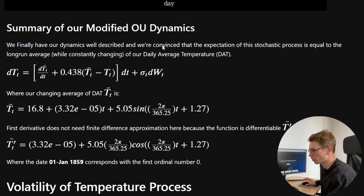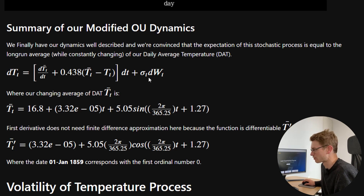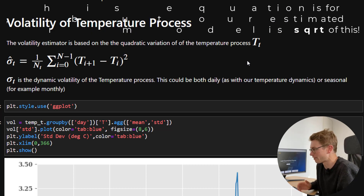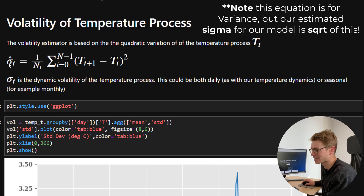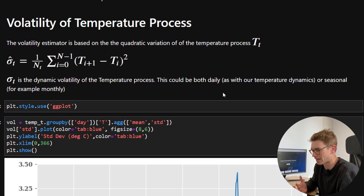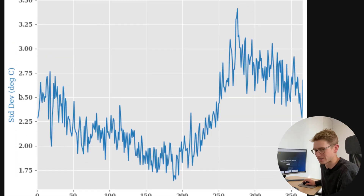Our summary of the modified Ornstein-Uhlenbeck process is that we've got modified dynamics where we've defined the mean reversion parameter, the change in daily average temperature T-bar, and the first derivative captured here — hence the modified OU dynamics. Now we want to define what the volatility parameter sigma, which varies with time, actually is. The volatility of the temperature process — the estimator based on quadratic variation — is our best estimate as the standard deviation. This is a dynamic volatility that could be seasonal, daily, monthly, etc. If we group on the day, we again get that blue line showing standard deviation across 366 days to include leap years.